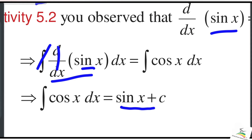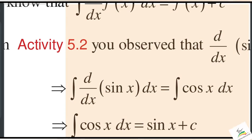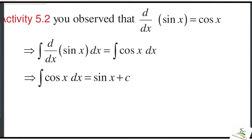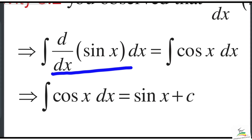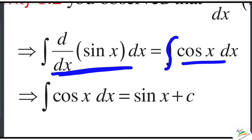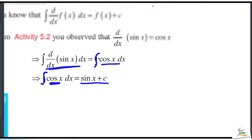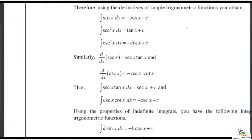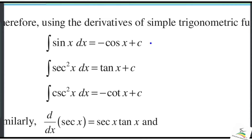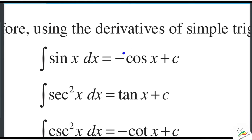Since sine x is the derivative, the integration of the derivative of sine x gives us cos x. So the integration of cos x: cos x integrates to sine x. That's the integration of cos x — the answer is sine x plus C.